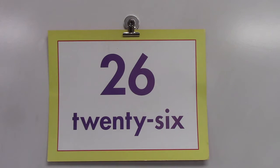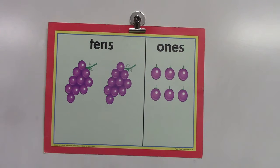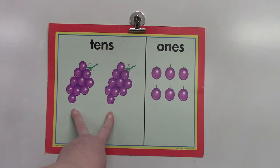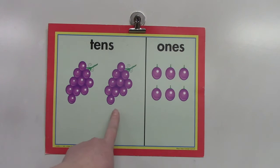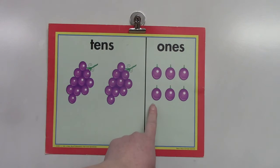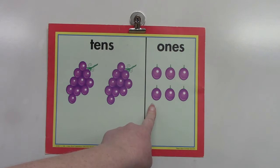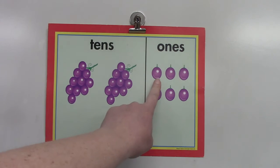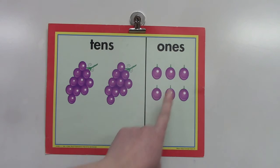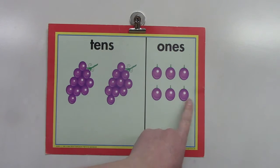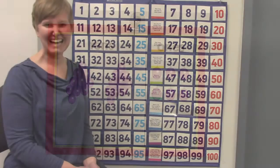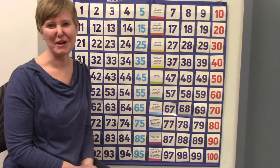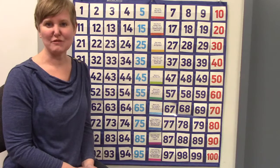Let's look at the number 26 together. Is 26 even or is it odd? It's an even number because it ends with a six. The other side of our card shows us that the two represents two groups of ten: ten, twenty, and the leftover six ones — ten, twenty, 21, 22, 23, 24, 25, 26.